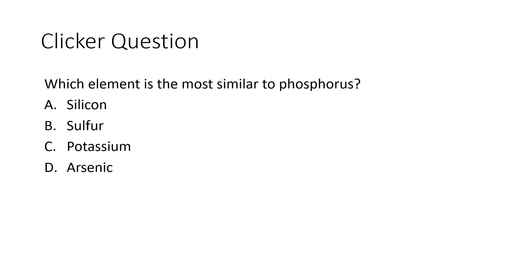This question wants to know which element is most similar to phosphorus. Similar properties will be found in the same column or the same family in the Periodic Table. So we're really asking which element is in the same column as phosphorus, or closest to it. Phosphorus is in group 15. Silicon is in group 14, potassium is way over in group 1, and arsenic is also in group 15, right under phosphorus. So the best answer is arsenic.